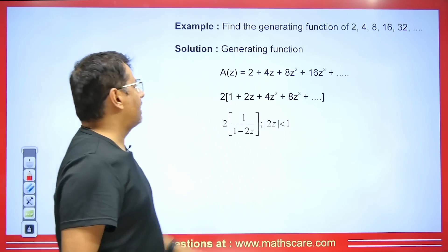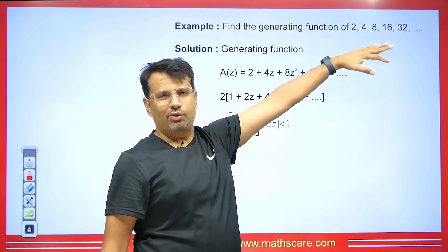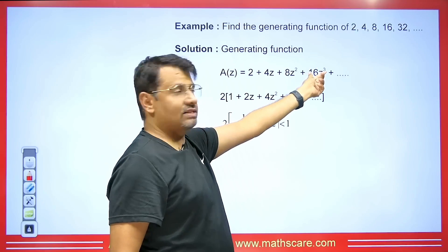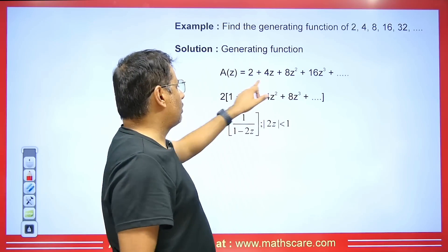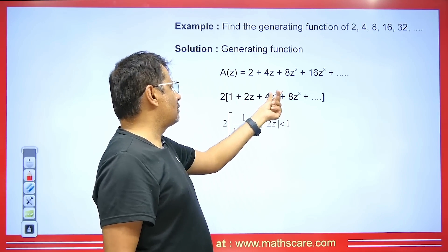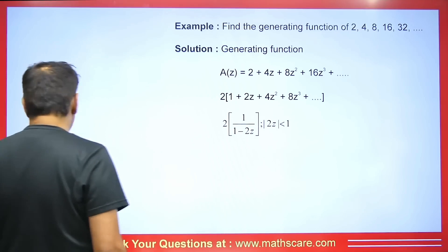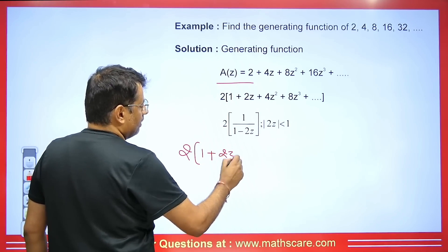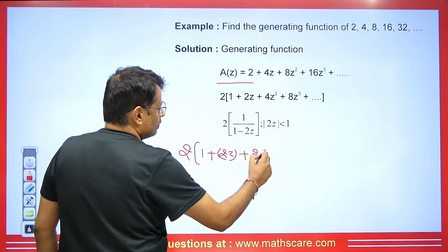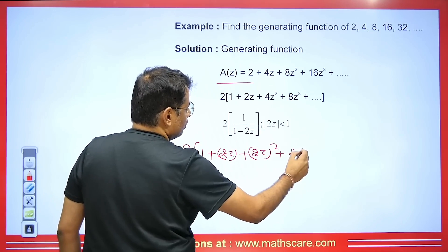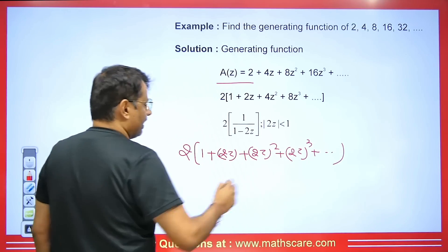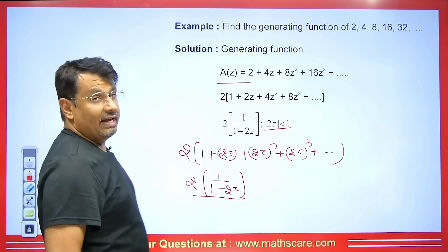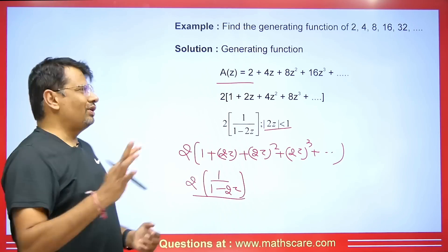Example: find the generating function of 2, 4, 8, 16, 32. The series is 2 + 4Z + 8Z² + 16Z³ + ... Taking 2 common: 2(1 + 2Z + (2Z)² + (2Z)³ + ...). This is a geometric series with ratio 2Z, so the sum is 2 · 1/(1−2Z), provided |2Z| < 1. This is the generating function.